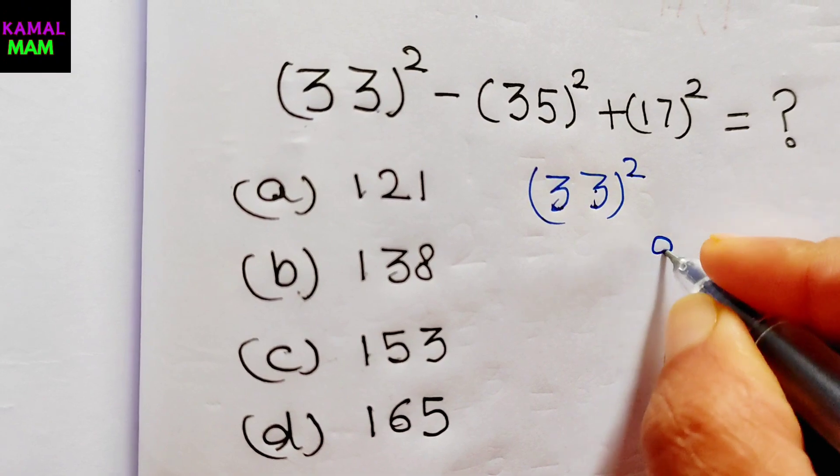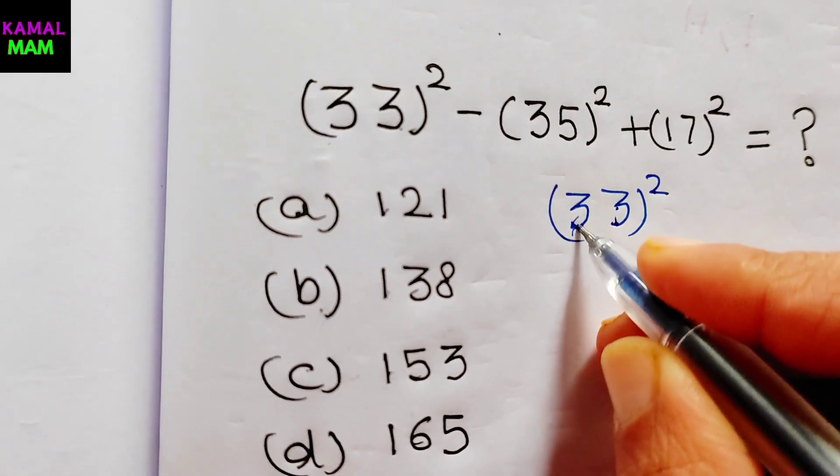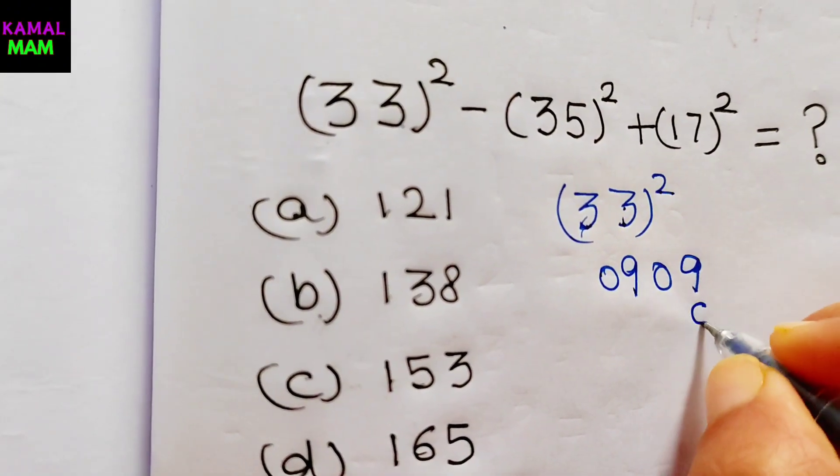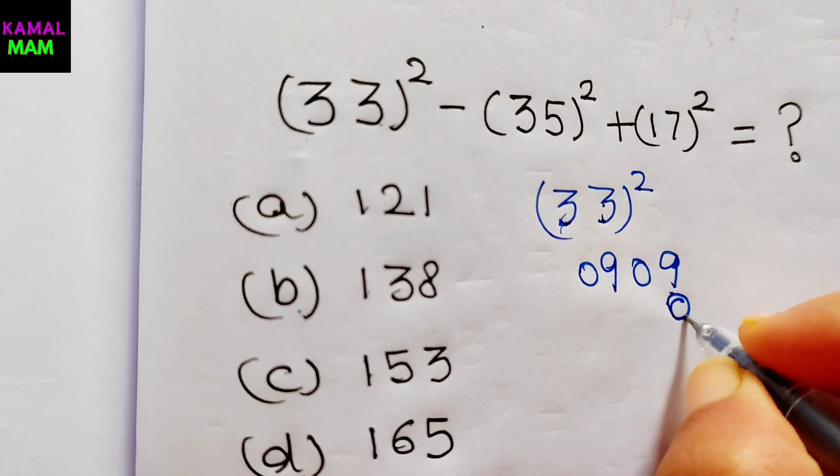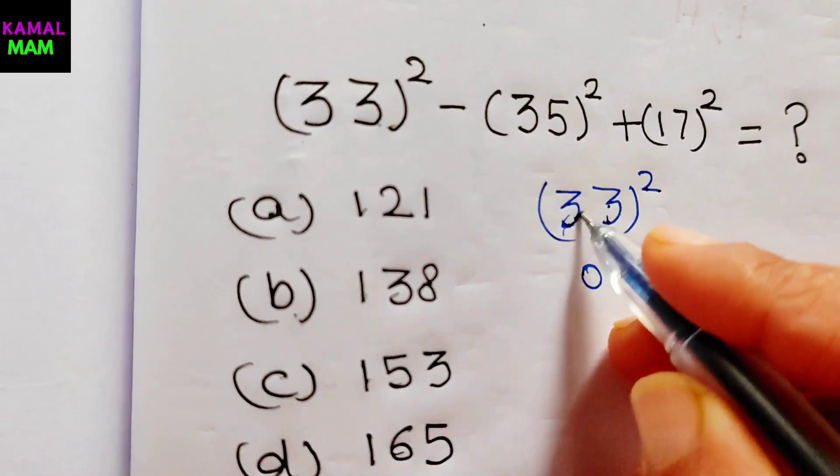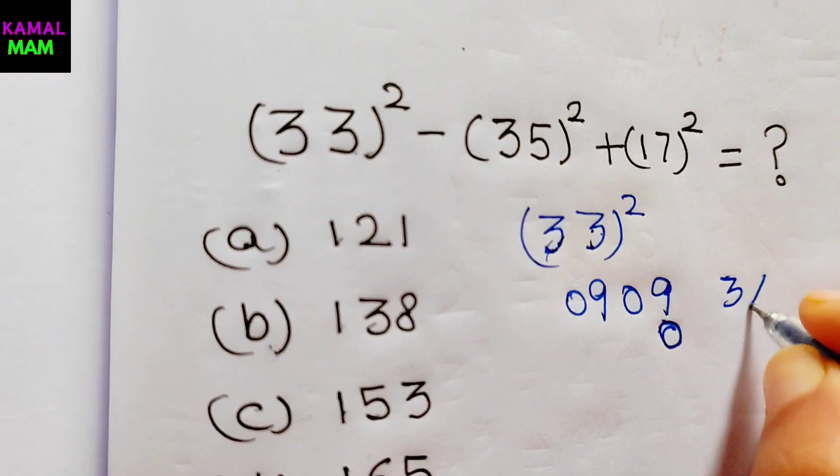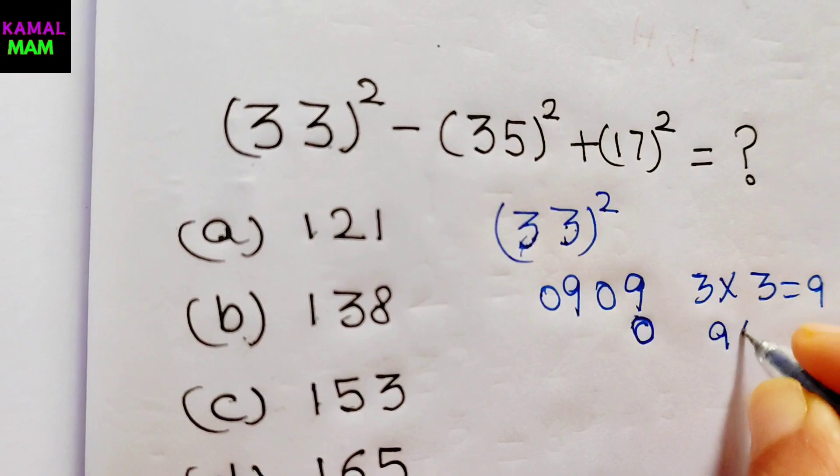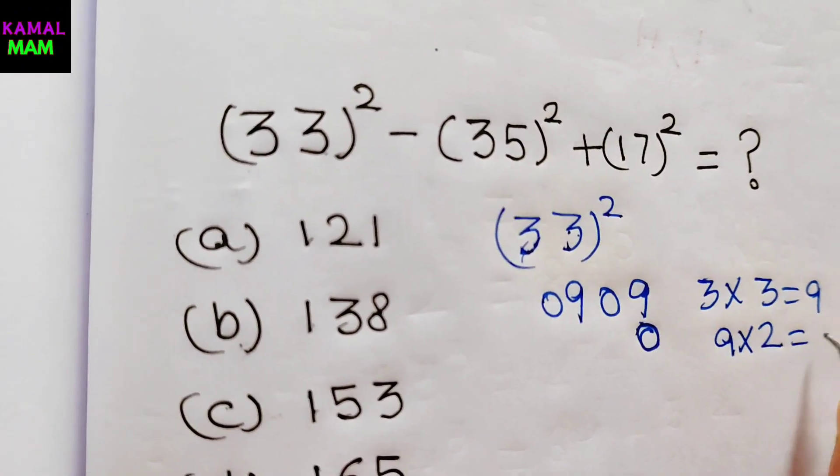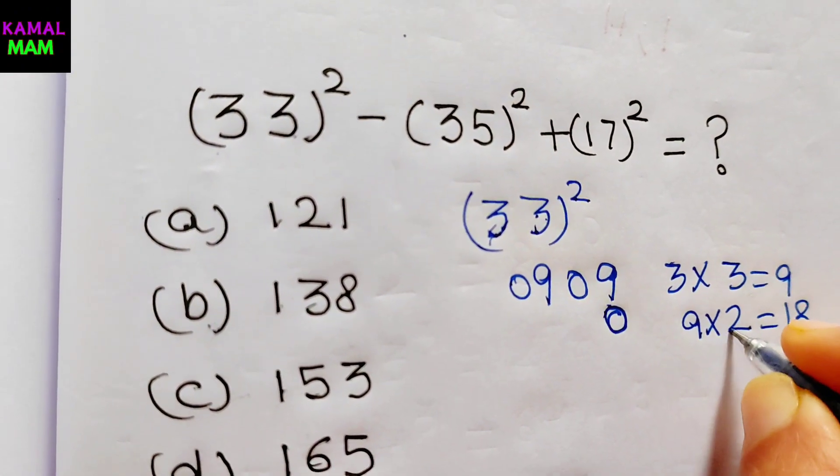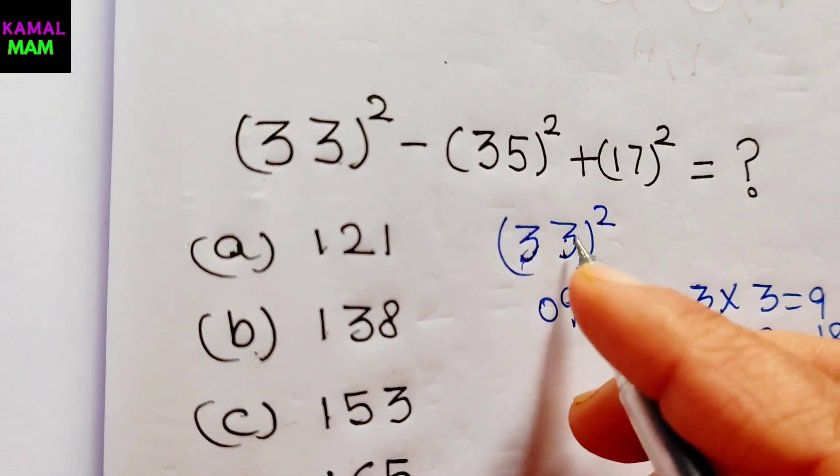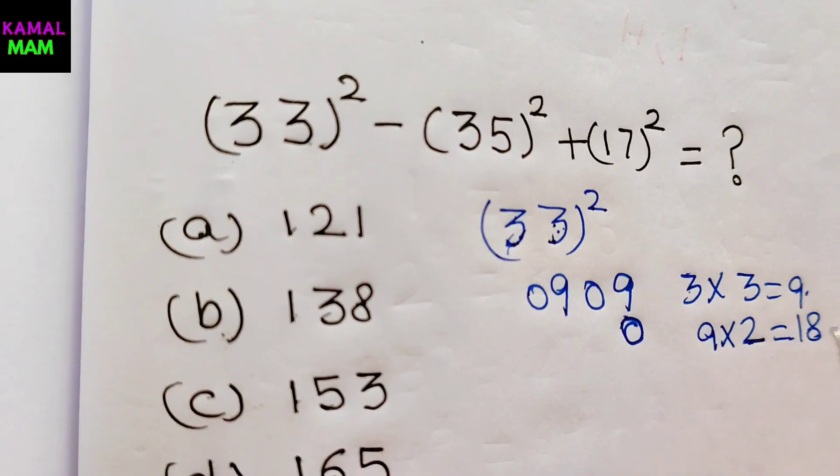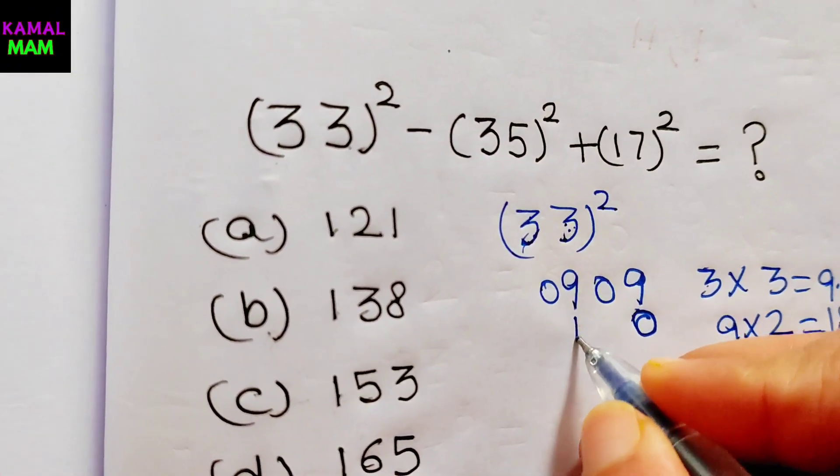Then take 0 here. Again 3 times 3 is 9. Again take 0 here. Then here 3 times 3 is 9, then 9 times 2 equals 18. You have to multiply 2 every time. 3 times 3 is 9, then this 9 times 2 equals 18, so we are going to write here 18.